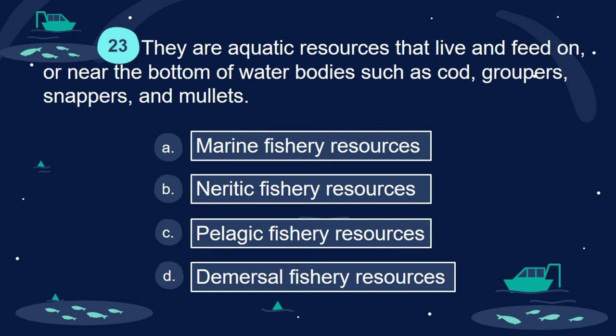Question 23. They are aquatic resources that live and feed on, or near the bottom of water bodies such as cod, groupers, snappers, and mullets. A. Marine fishery resources. B. Neuritic fishery resources. C. Pelagic fishery resources. D. Demersal fishery resources.